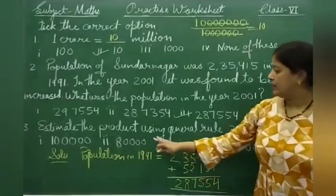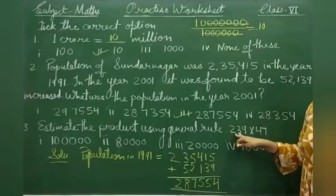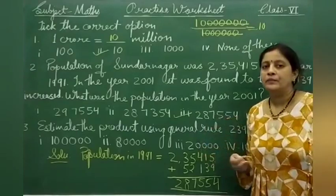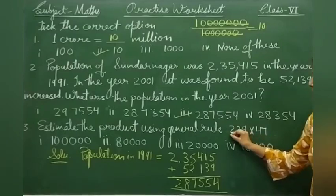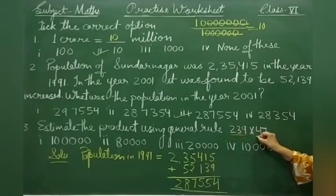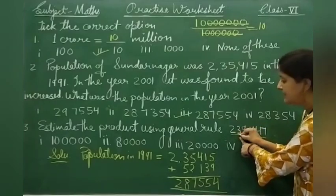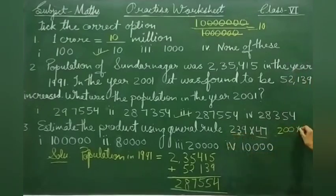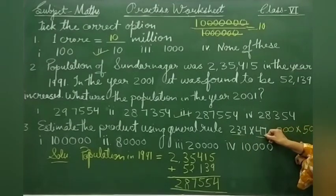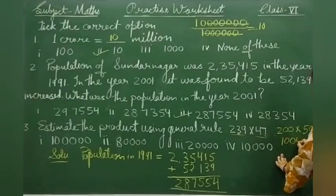Question number 3: Find the product using the general rule. The general rule is: you round up the numbers to the nearest place value — the first number to the nearest hundred, and the second to the nearest tens. For 215, the tens place is 1, so it is nearer to 200. Multiply by 47; when rounded to tens, the ones digit is 7, which is greater than 5, so it rounds up to 50. The estimated product is 200 × 50 = 10,000.